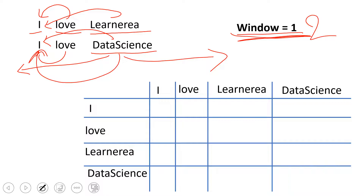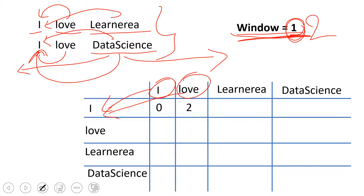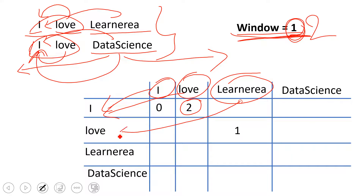Considering this, let's try to fill the grid. First, how many times does 'I' appear with 'I'? The window size is one, and in both sentences 'I' never comes with 'I', so the answer is zero. Next, how many times does 'love' appear with 'I'? It happens twice — once in the first sentence and once in the second — so we put the value two. Then, how many times does 'learn' appear with 'love'? Just once, so we put the count one.